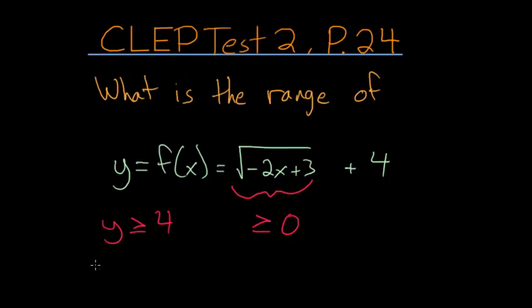And we can write this a couple different ways. We can say that 4 is the lowest value and it goes all the way to infinity. Or we can use brackets concerning the y values such that y is always bigger than or equal to 4.